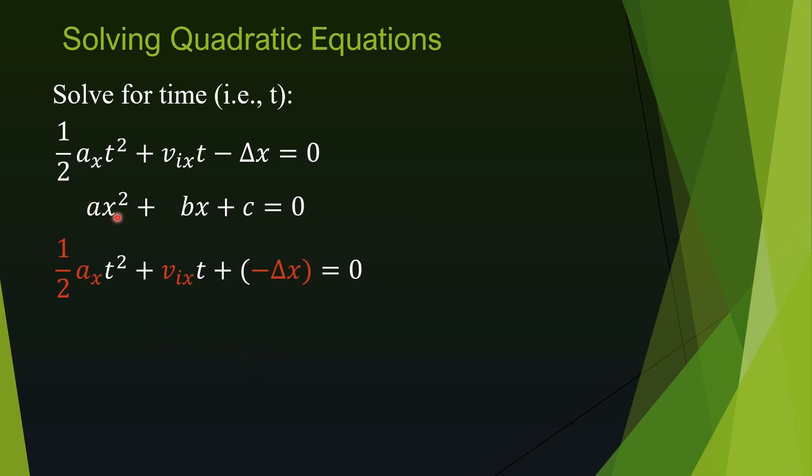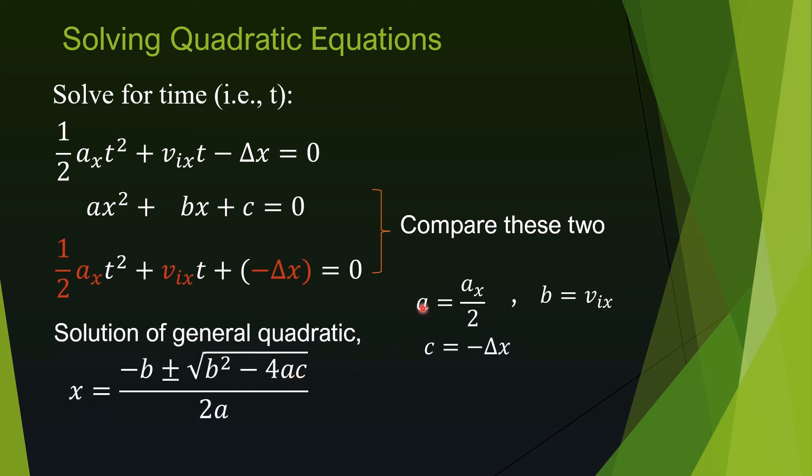Coefficient a is the one that is multiplying x squared. Therefore, a must be everything that is multiplying t squared. Comparison of our equation with the general quadratic equation gives us a is equal to half times aₓ or aₓ over 2. Similarly, comparison of the second term gives us b is vᵢₓ because b is multiplying x, and x for our case is t. Similarly, c is negative Δx.